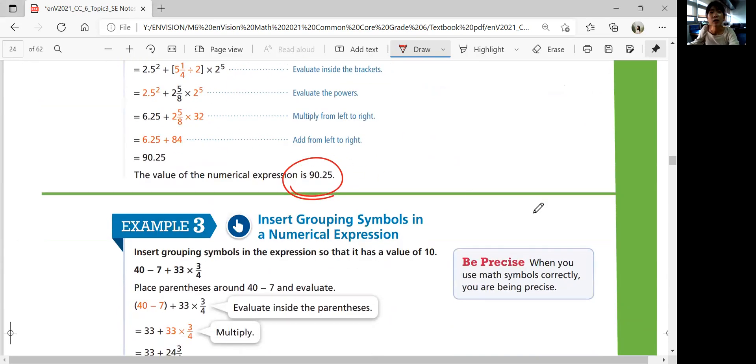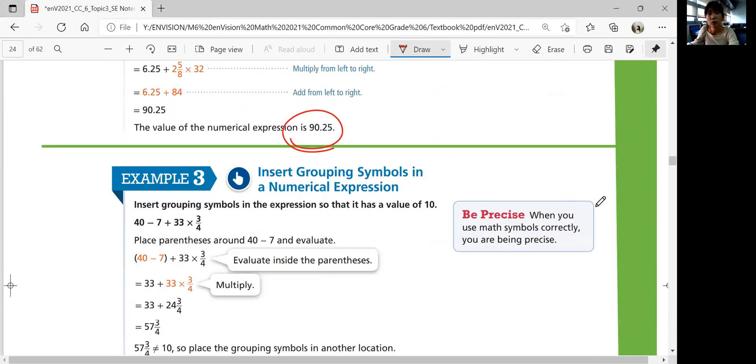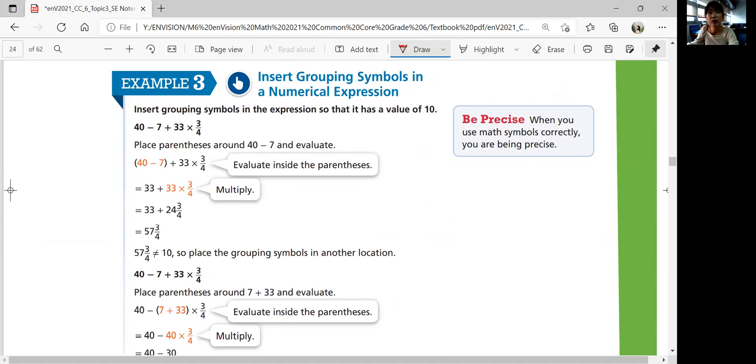Example 3. Inserting grouping symbols in a numerical expression. How do you insert grouping symbols in the expression so it has a value of 10? That means you're going to add parentheses or brackets to group the order of operation together to decide which order you're going to do first.